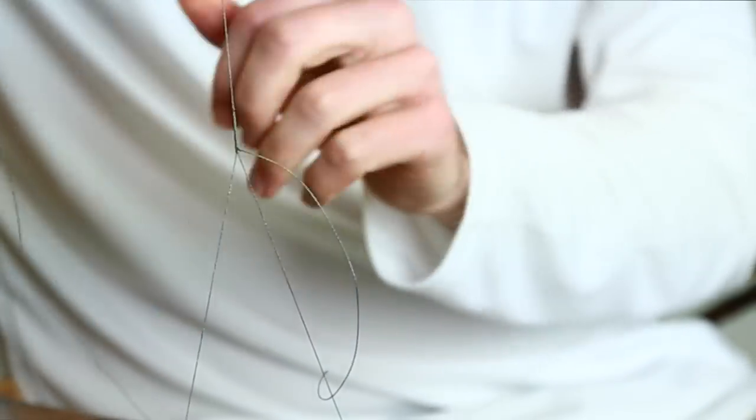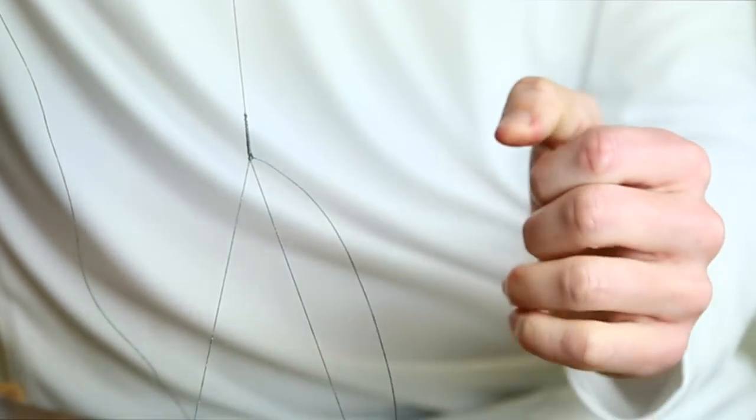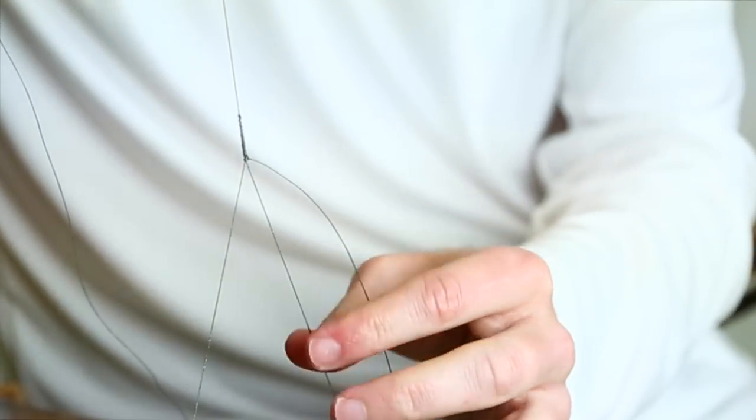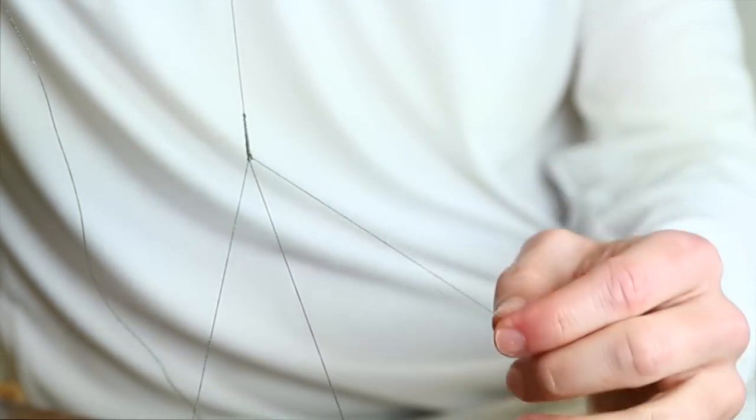So that's it. So we have our bimini twist now. The final step will be just to cut off the tag end and as far as attaching to the line you would then just have this double line to tie whatever type of knot you prefer. So anyhow if you have any questions please let us know. You can leave a comment down below. Otherwise we hope you get on the water soon and catch you some big ones.